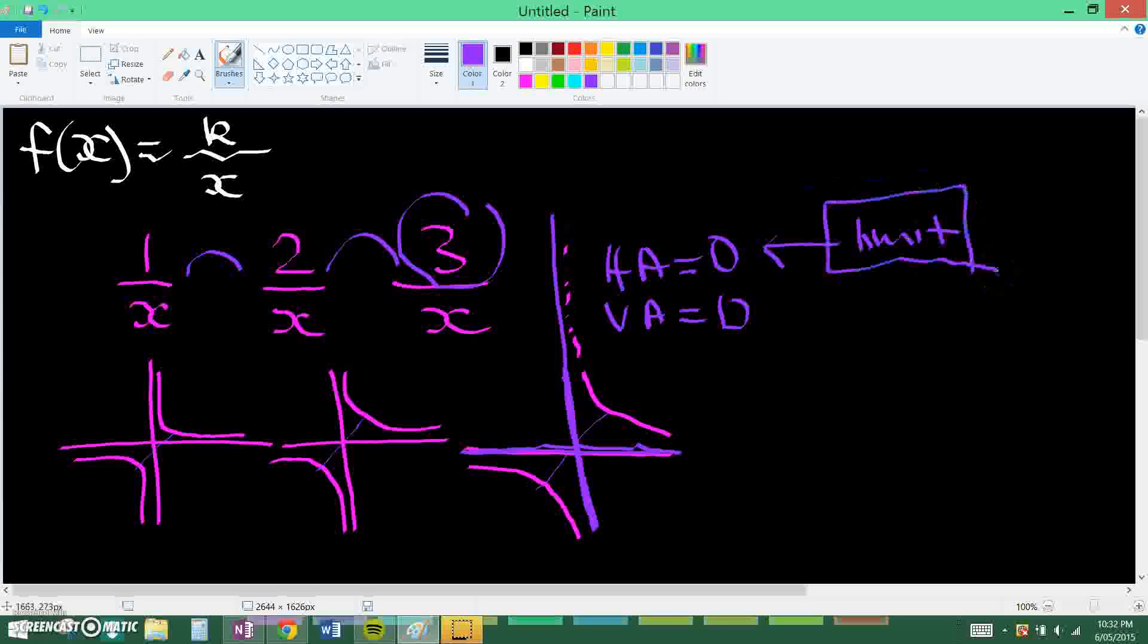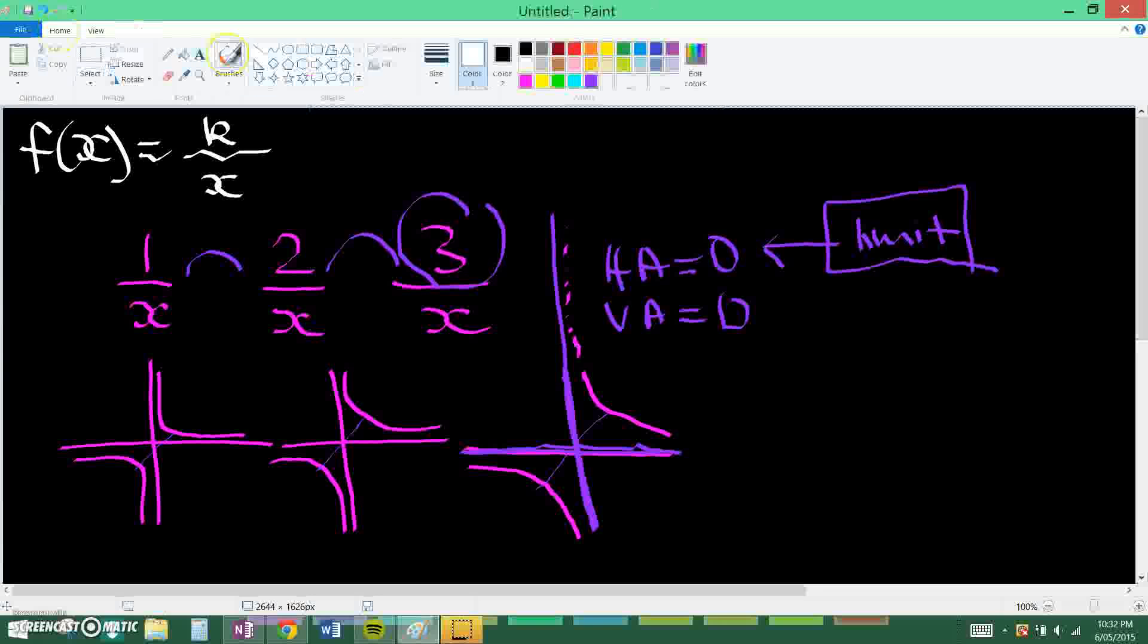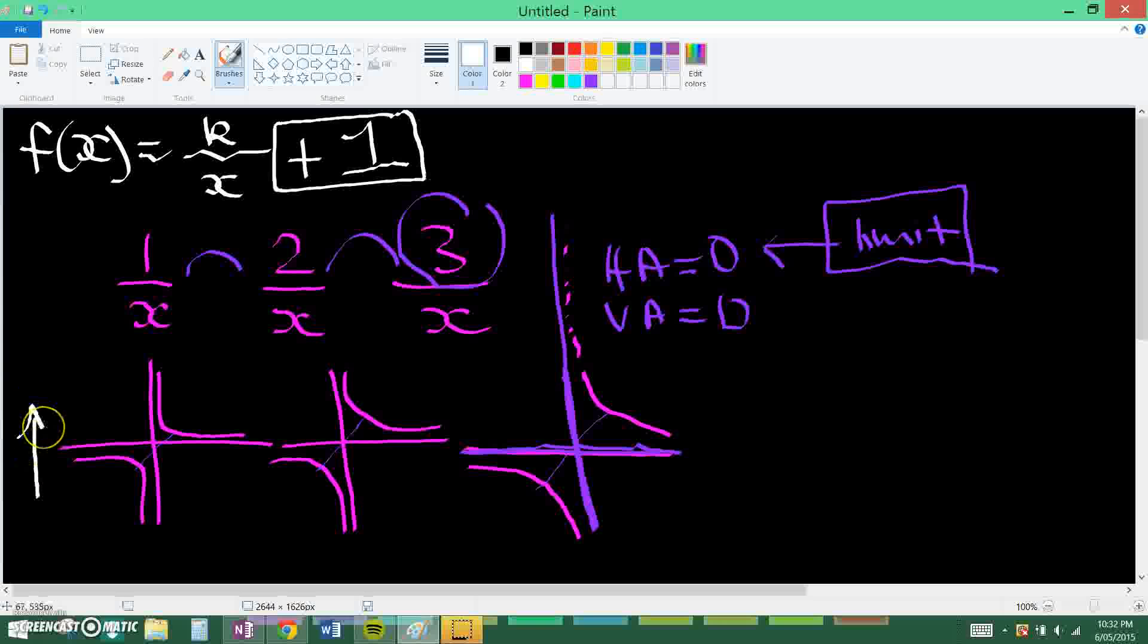Now basically if you add a number at the front, say one over here to the equation, if you've done translations before, you'll know that if you add a number what it does is it moves these up. So basically what the new graph will look like is this.